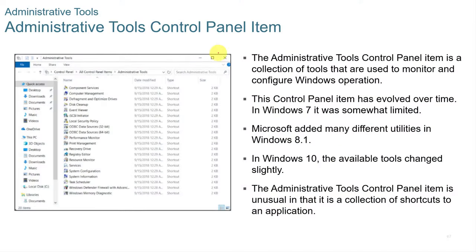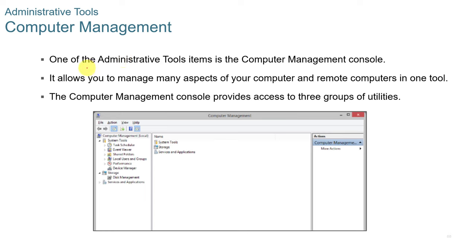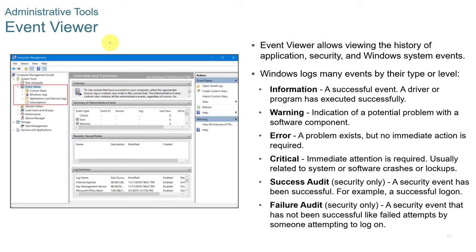Systems Administration. The Administrative Tools Control Panel is a collection of tools used to monitor and configure Windows operations. Computer Management allows you to manage many aspects of your computer and remote computers in one tool. The Event Viewer is helpful for diagnosing crashes — you can see events that occurred right before a reboot and determine whether a bad driver or program was responsible. Events are categorized as information, warnings, errors, critical, successful audits, or failure audits.